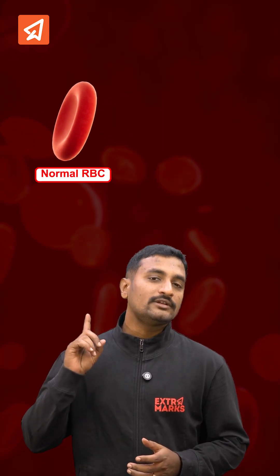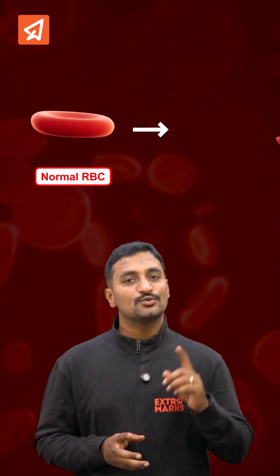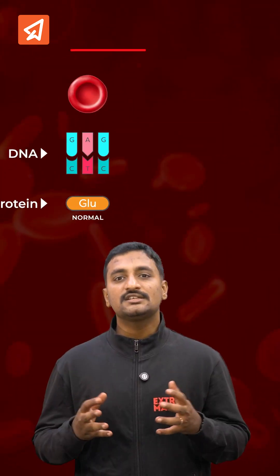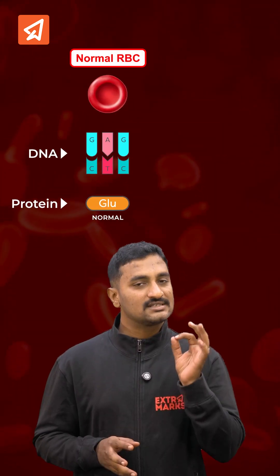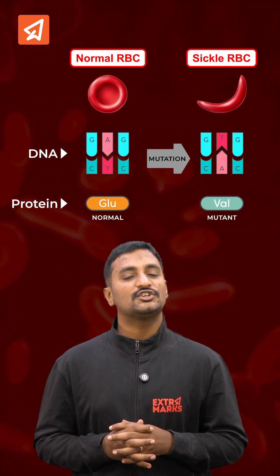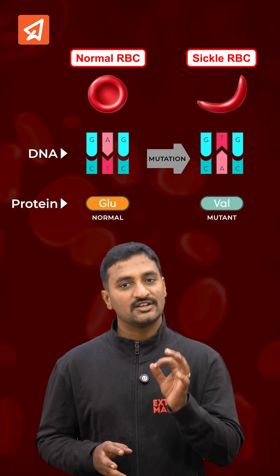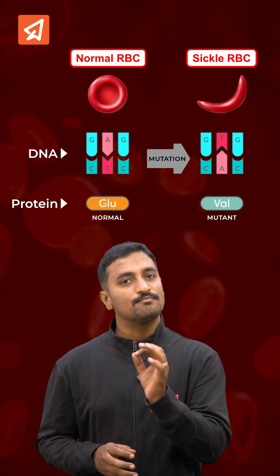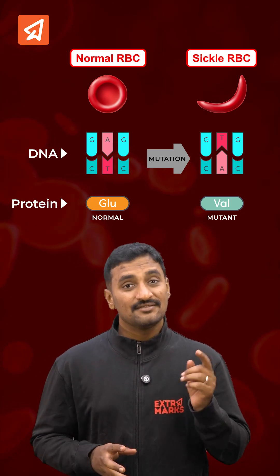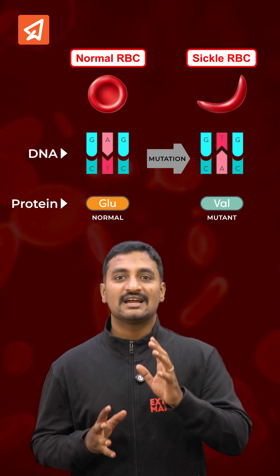Have you ever wondered why biconcave-shaped RBC changes to a sickle-like structure? This is because of a single-point mutation which takes place in the gene of the beta-globin chain of hemoglobin protein, which is found inside the RBC.